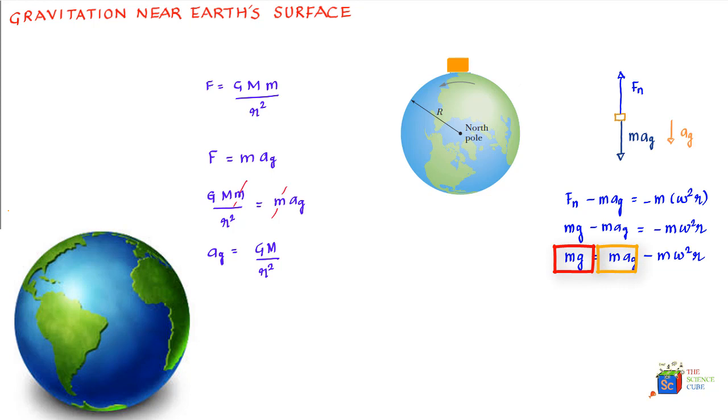Which is nothing but measured weight being equal to gravitational force minus the mass into the centripetal acceleration. Thus, the measured weight is actually less than the gravitational force due to Earth's rotation. We could also say that g is equal to ag minus omega square r, or in other words, the measured free fall acceleration is less than the gravitational acceleration because of Earth's rotation.